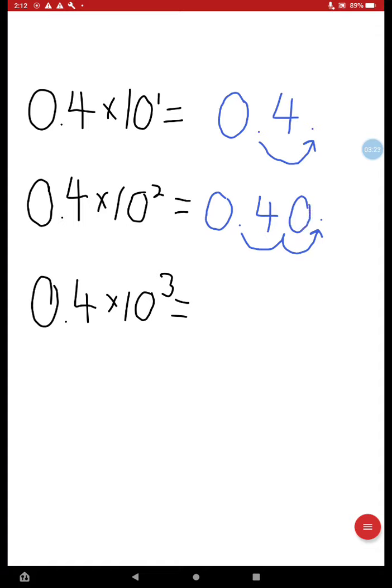And now, 0.4 times 10 to the third. Write out 0.4. And shift that decimal place over one, two, three. And fill in those empty spaces with a 0.